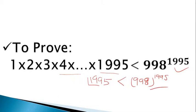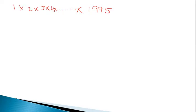You can pause the video and try. So the question is: 1 × 2 × 3 × 4 × ... × 1995 — let's call this the LHS. We need to prove this is less than 998 to the power 1995. We need to do some arrangement here.